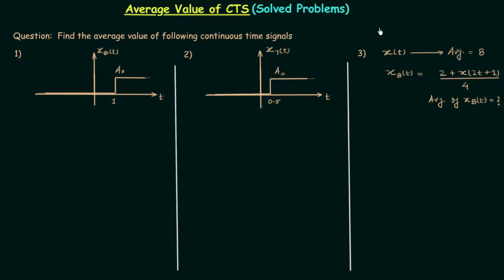In the previous lecture we solved three problems based on the calculation of average value of continuous time signals. In this lecture also we will solve three problems based on the calculation of average value. This is part two of the solved problems.